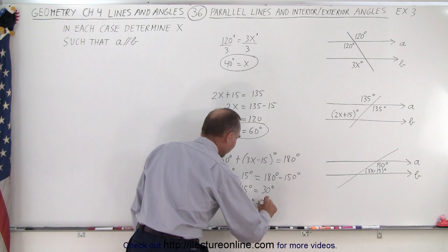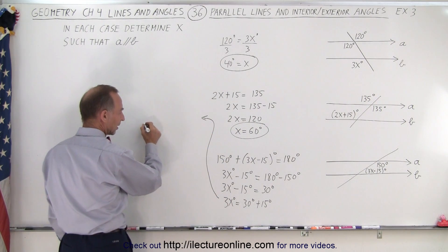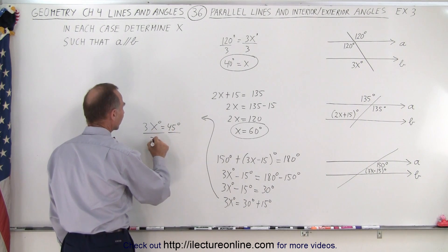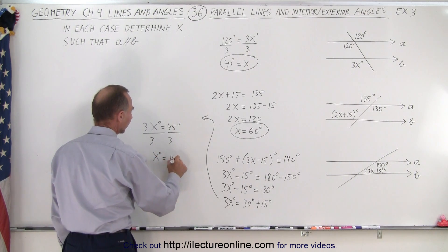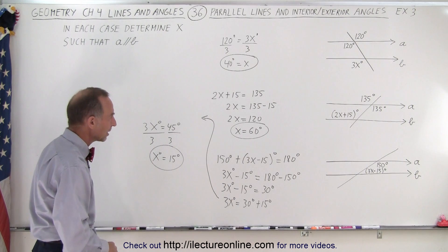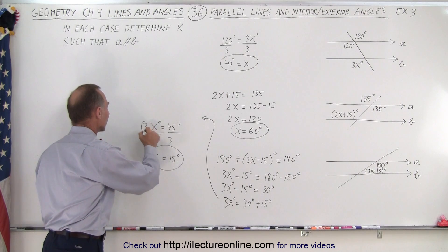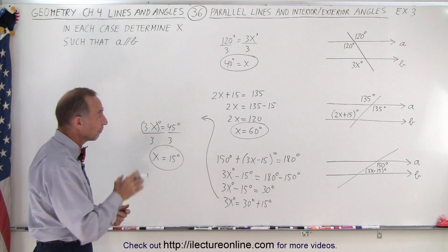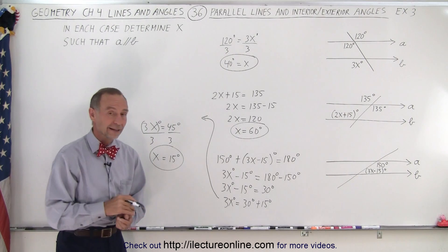And then continuing over here I can then say that 3x degrees is equal to 45 degrees. Divide both sides by 3, I get x degrees is equal to 15 degrees. And notice that's the answer: x must be equal to 15 degrees for lines a and b to be parallel to one another. And that is how it's done.